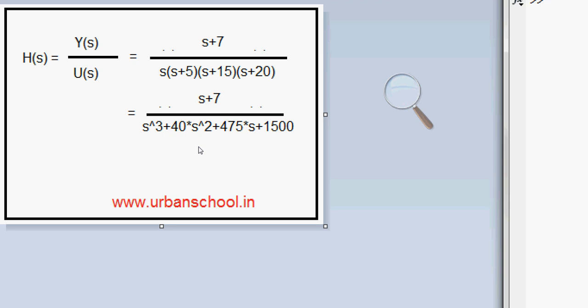To be specific, I have taken an example here. Let's suppose my transfer function H(s), which equals the output upon input, is an open loop transfer function which says s plus 7 by s into s plus 5 into s plus 15 into s plus 20. So in the very first step you need to convert the numerator as well as the denominator into simple polynomial form as I have done here. My numerator is already in linear form, that is s plus 7, and the denominator I have solved here which is s cubed plus 40 s squared plus 475 s plus 1500.